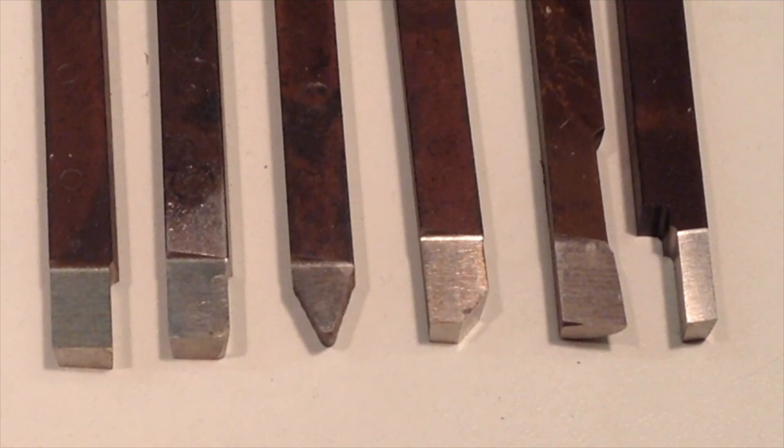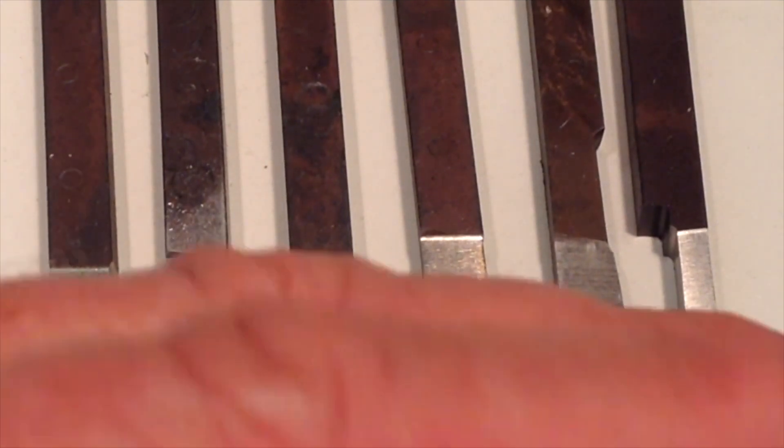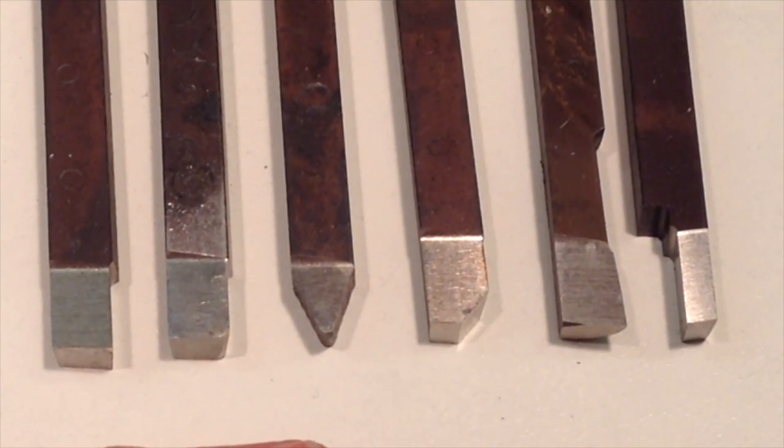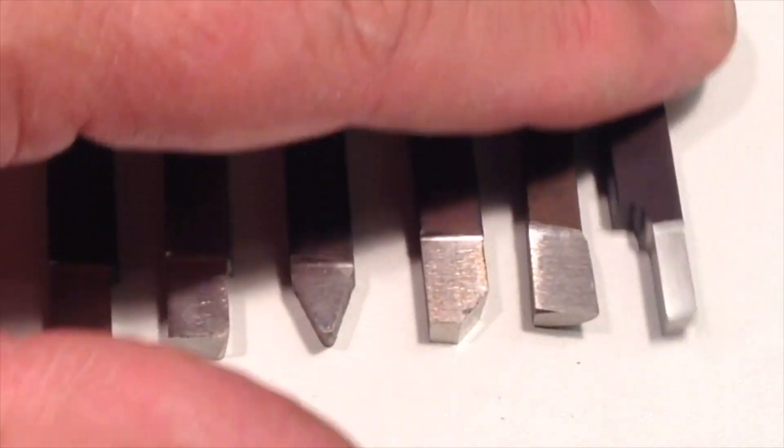But once you have used these for a while, you can use them as guides to sharpen or shape your own tools that you can do from blanks. And the reason you would want to do that is this set costs about $32 for six tools. Whereas you can buy the blanks for less than a dollar a piece. So you could make your own set of six like this for around $6 or something in that ballpark, 2014 prices. So that's a good way to get started with high speed steel tools.